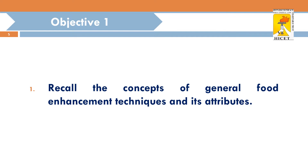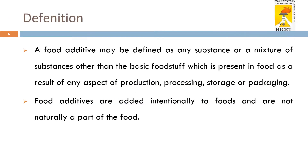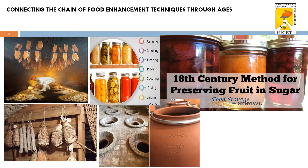Objective 1: Recall the concepts of general food enhancement techniques and its attributes. Food additives are substances which are intentionally added to food and they are not naturally a part of food; they can be added during processing, production, storage, or packaging. The food enhancement technique has been followed through ages for preservation methods. Common preservation methods used in earlier days include canning, smoking, freezing, pickling, and drying — these are used to improve the keeping quality of food products.